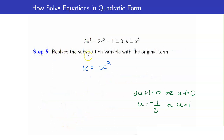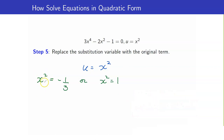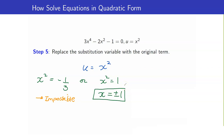We still have to replace the substitution variable with the original term to solve for x. Since u = x², we get x² = -1/3 or x² = 1. Can the square of a number equal a negative number? No — so x² = -1/3 is impossible, no solution there. However, x² = 1 gives us x = ±1. So these are the solutions to the equation.